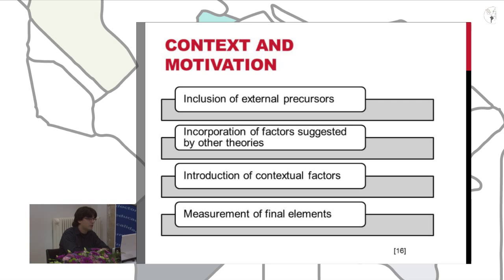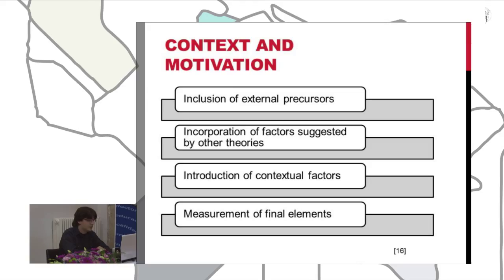In order to overcome these limitations, increase the percentage of variance that this model explains, or adapt to new contexts, this model is frequently modified. The more frequent modifications can be categorized as: the inclusion of external precursors, the incorporation of additional factors, the introduction of contextual social factors, and the measurement of new framework items.